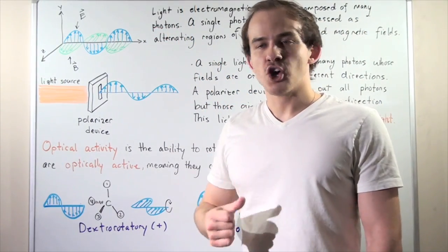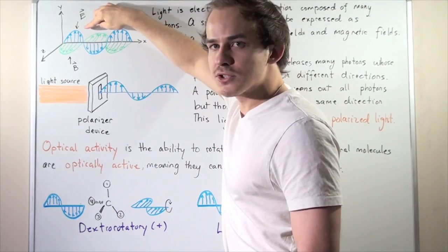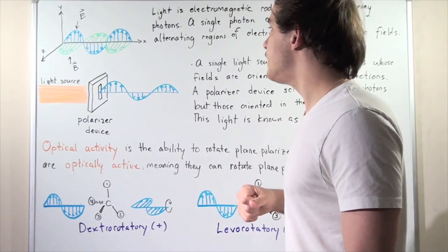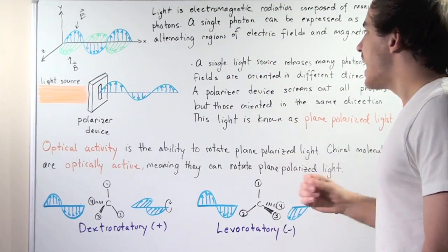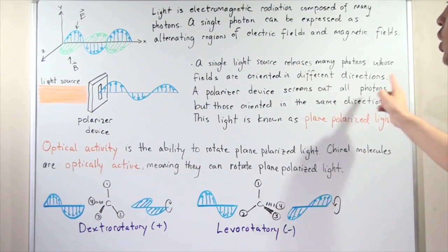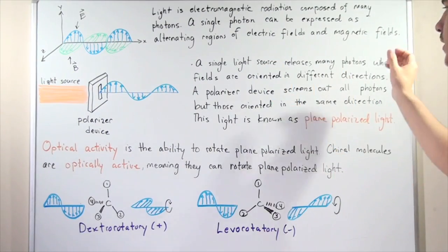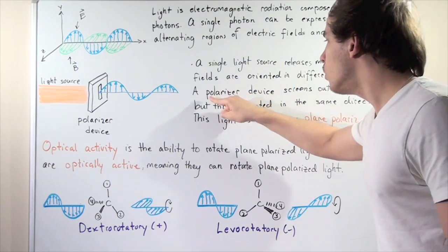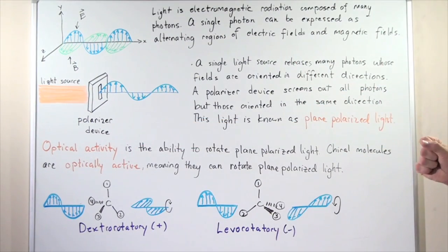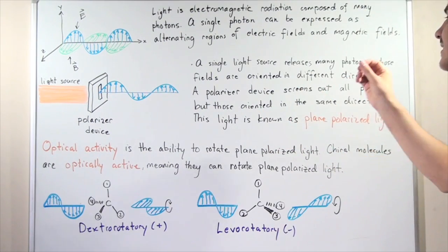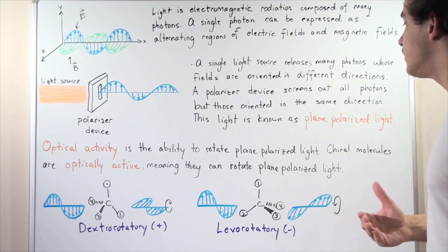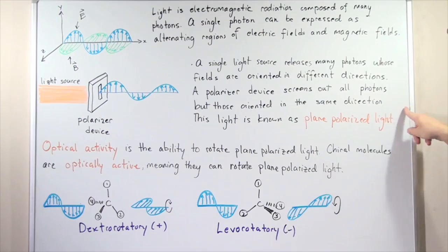To simplify things, we're only going to express the electric fields in this lecture, so we're not going to draw out our magnetic fields. A single light source releases many different types of photons whose fields are oriented in different directions. A polarizer device, such as the one shown here, screens out all photons but those oriented in the same direction. This screened-out type of light is known as plane polarized light.